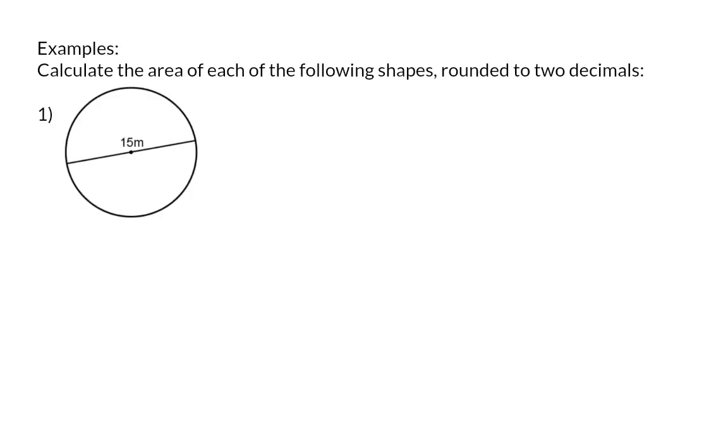Examples. Calculate the area of each of the following shapes, rounded to 2 decimals. Our first shape is a circle where the diameter is given as 15 meters. For the area of a circle, the formula is pi times the radius squared. So you need to be careful to make sure that you substitute half of the diameter. That is 7 and a half as my radius, and then square that. Here the rounded area is 176.71 meters squared.